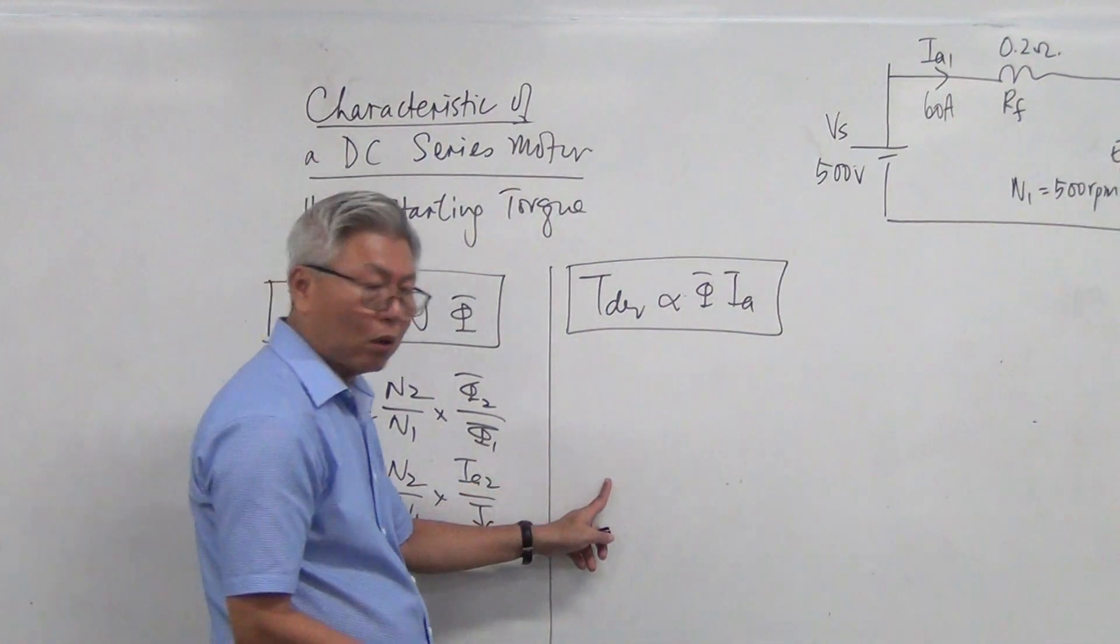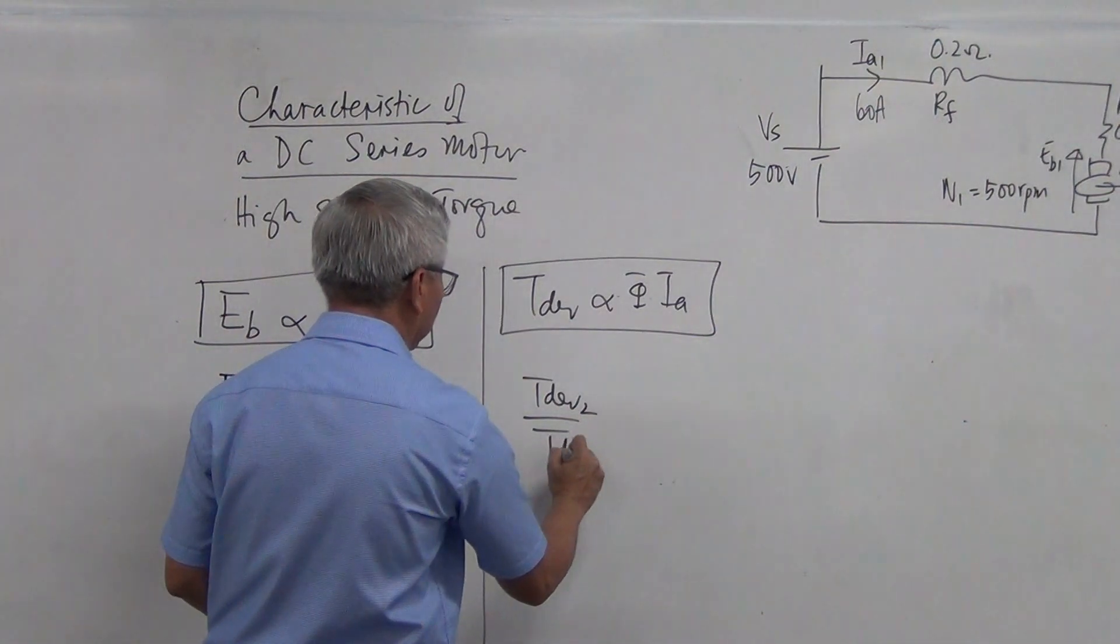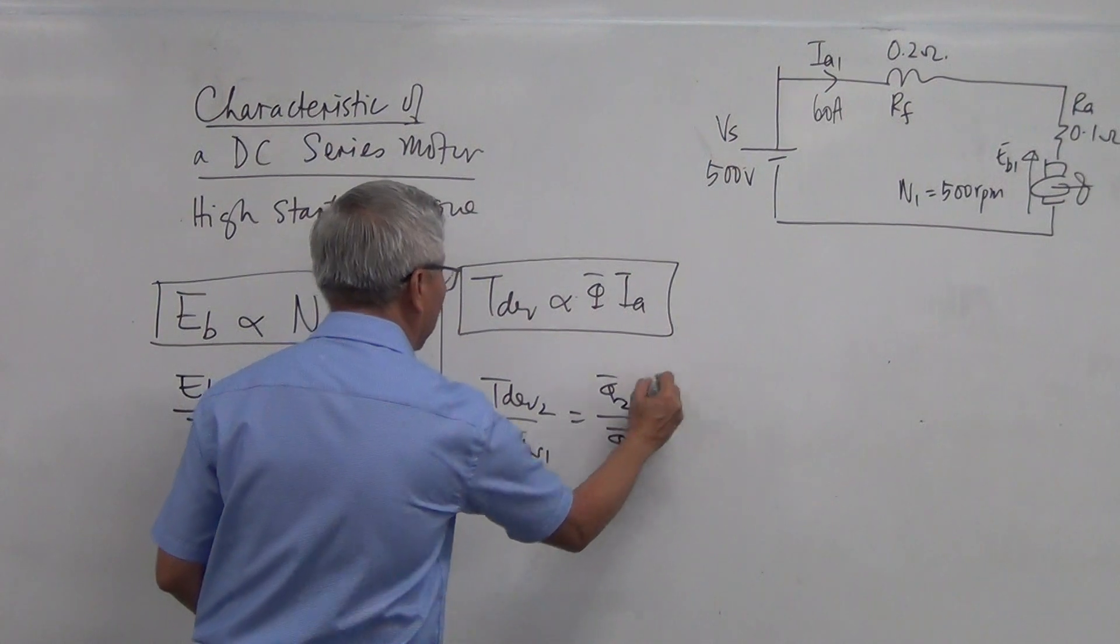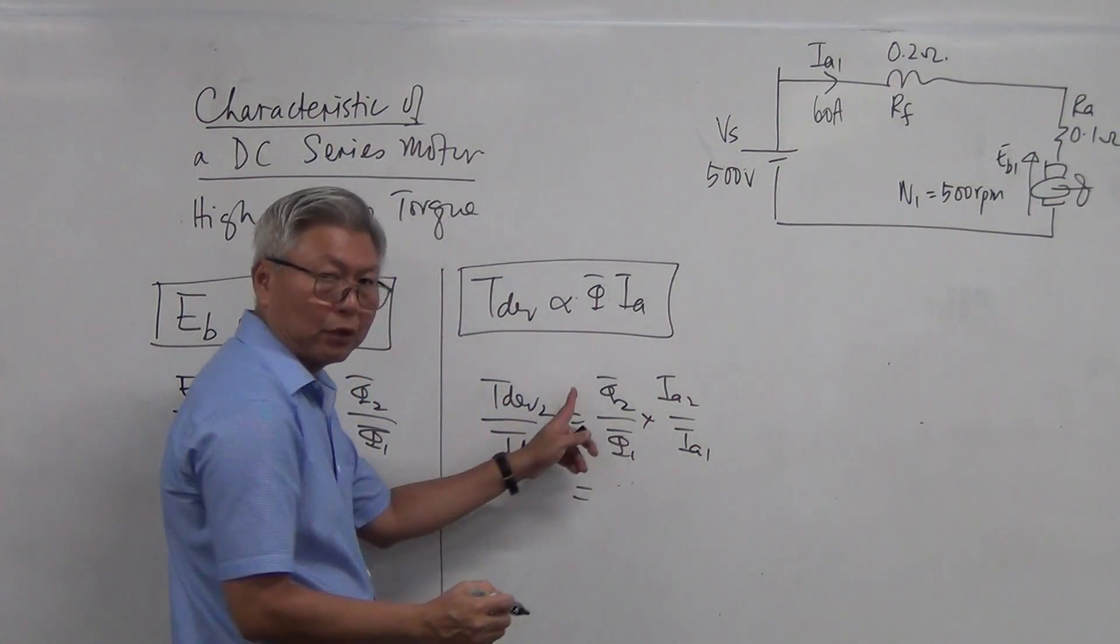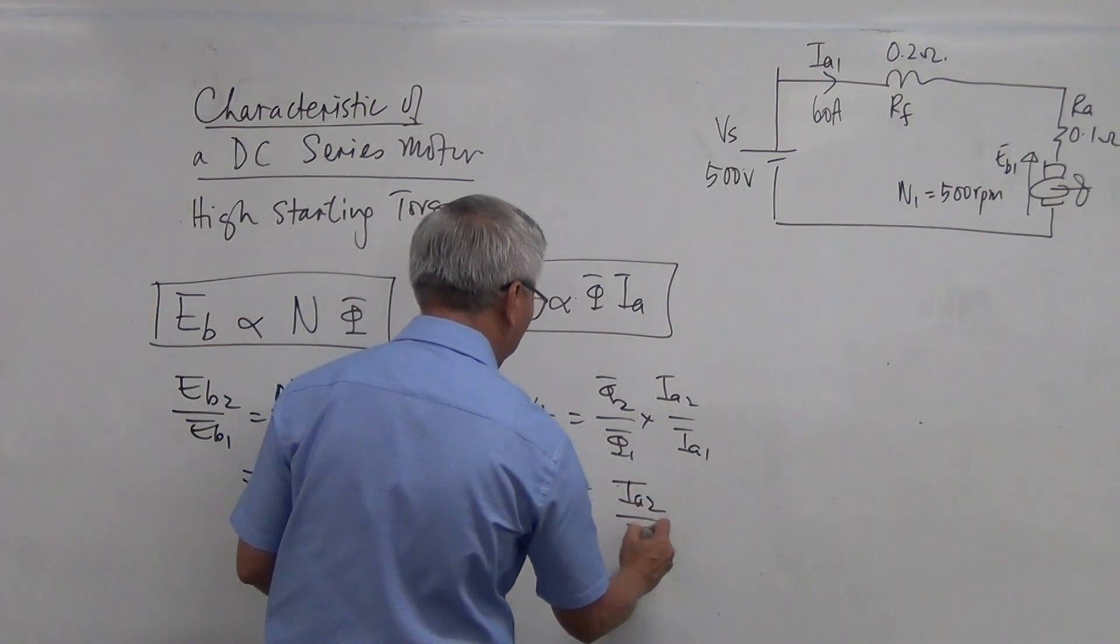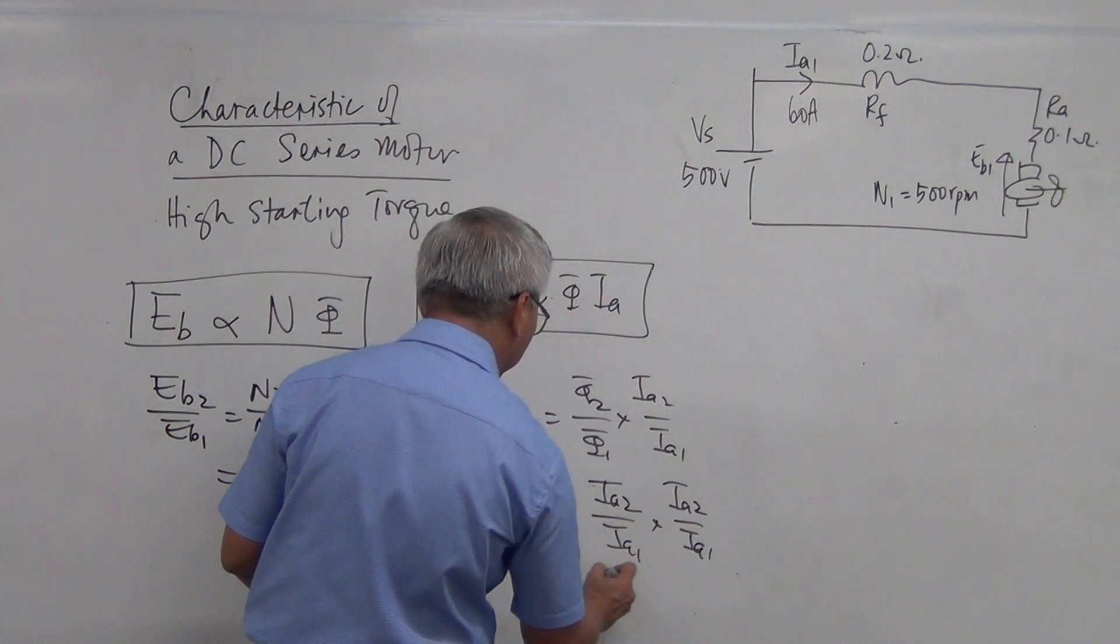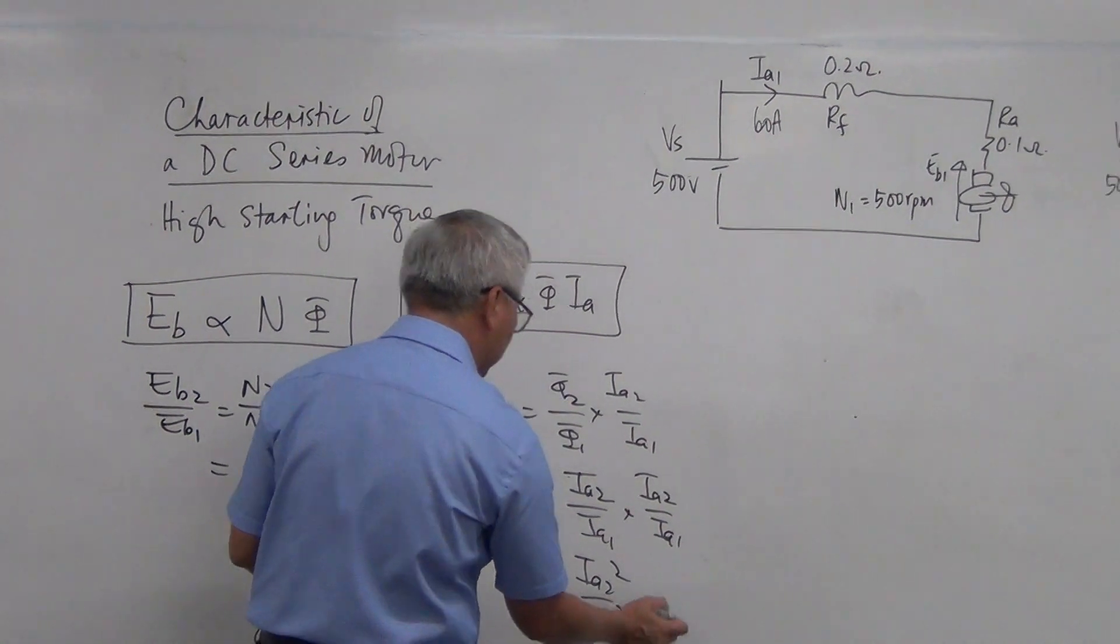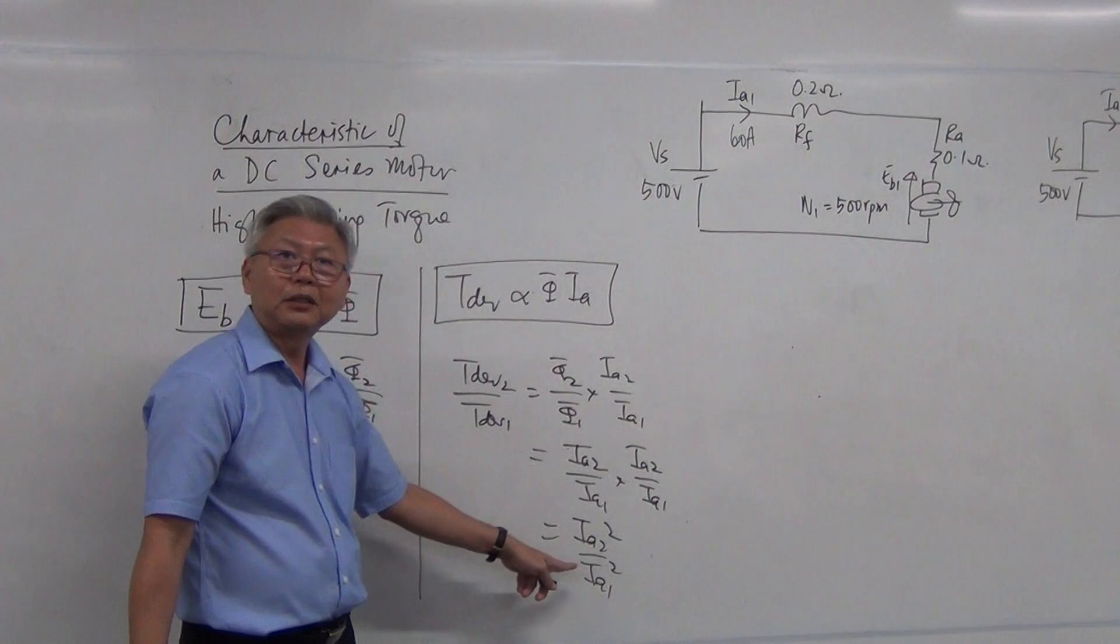And as well as torque, we would have torque developed 2 divided by torque developed 1 equal to flux 2 over flux 1, IA2 over IA1. And this time, if you replace it by flux, it will become IA. So it's IA2 over IA1 multiplied by IA2 over IA1 and then give rise to IA2 square over IA1 square. Why square? Because both currents are the same current. Got it?